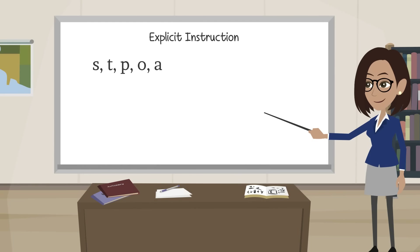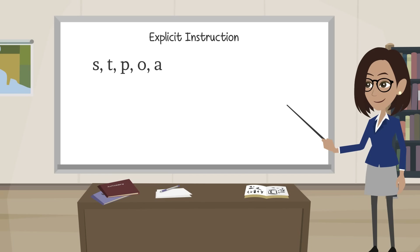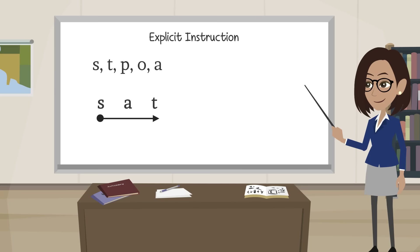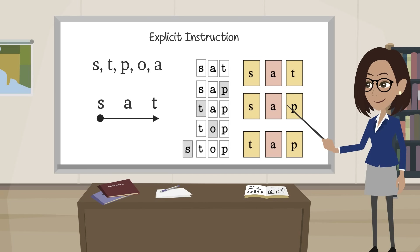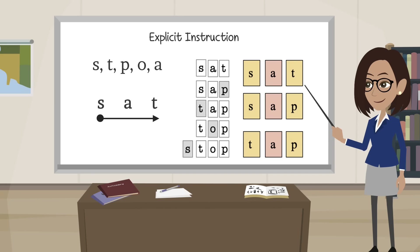With explicit instruction, a teacher directly teaches the subskills associated with reading. For example, a teacher would begin by teaching the letter sounds for S, T, P, O, and A. The teacher would then teach students how to blend those sounds together to read words. In addition, teachers will directly show students how changing a letter changes the word — sat becomes sap, sap becomes tap, and so forth.